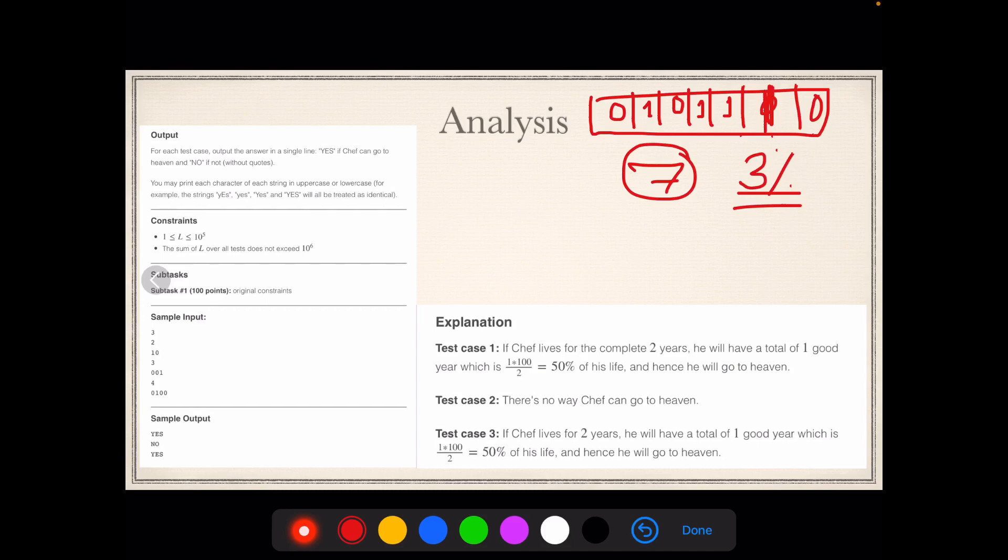For our question, let's make it this one. As soon as I make it one, you'd see there are four ones, that means the Chef has done more than 50% good deeds in his life, so he is eligible to go to heaven. Now as soon as you are eligible to go to heaven, print yes.